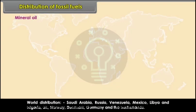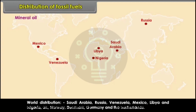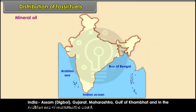Mineral oil — world distribution: Saudi Arabia, Russia, Venezuela, Mexico, Libya, Nigeria, UK, Norway, Denmark, Germany and the Netherlands. In India: Assam, Digboi, Gujarat, Maharashtra, the Gulf of Khambhat and in the Arabian Sea off the Maharashtra coast.